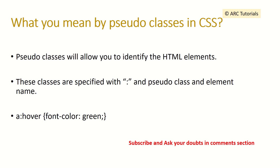What do you mean by pseudo classes in CSS? Pseudo classes allow you to identify HTML elements. They are specified with a colon followed by the pseudo class name — for example, a:hover where hover is the pseudo class. Some common pseudo classes are :hover, :before, :after, and :first-child.